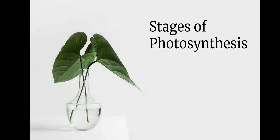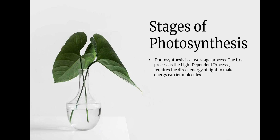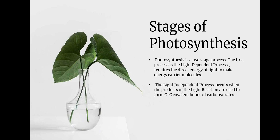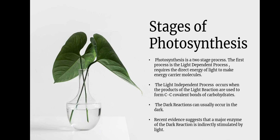Next we see the stages of photosynthesis. Photosynthesis is a two-stage process. The first stage is the light-dependent process, which requires the direct energy of light to make energy carrier molecules. The second stage is the light-independent process, which occurs when the products of the light reaction are used to form C-to-C covalent bonds of carbohydrates. The dark reaction can usually occur in the dark. Recent evidence suggests that a major enzyme of the dark reaction is indirectly activated by light.